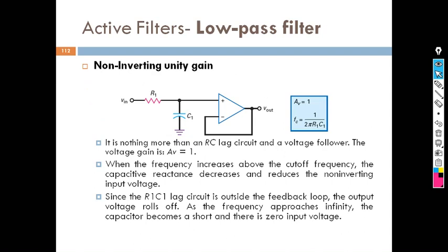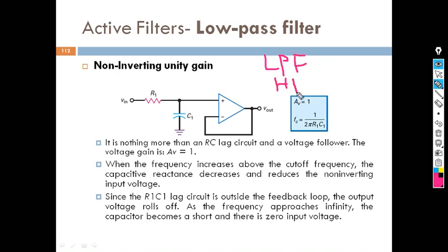Based on the design, there are three types of filters: low pass filter, high pass filter, and band pass filter. The first one is called a low pass filter — it passes only low frequency components. The second is the high pass filter — it passes only high frequency components. The third one is the band pass filter. So three types of filter classifications are there.